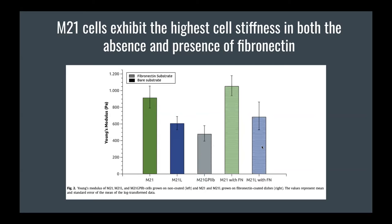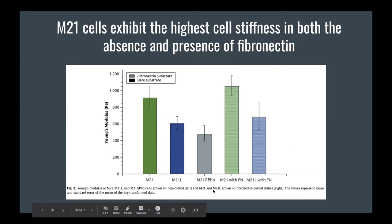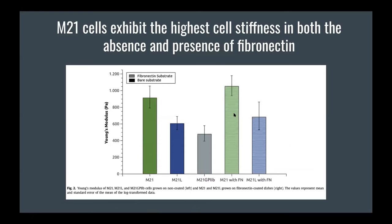The cells were then grown on a fibronectin-coated dish — adherent growth — and in both cases, whether or not the cell has the alpha v beta 3 integrin, the stiffness is up-regulated compared to suspension growth. The three bars on the left represent suspension growth, and the bars on the right represent adherent conditions, showing higher overall stiffness in adherent conditions.